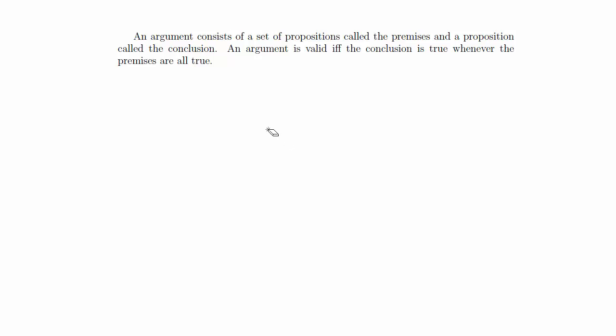In this video we're going to go over logic arguments and how to prove them using the method of derivations. An argument consists of a set of propositions called the premises and a proposition called the conclusion. An argument is valid if and only if the conclusion is true whenever all the premises are true.